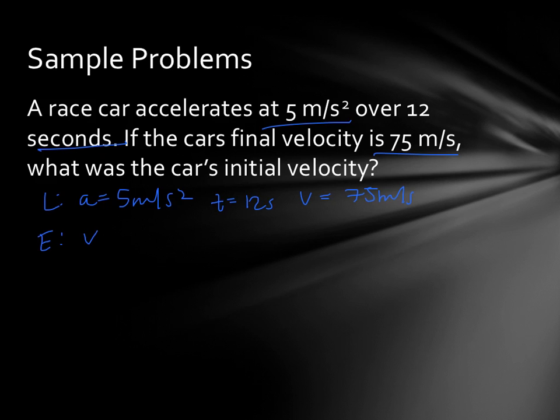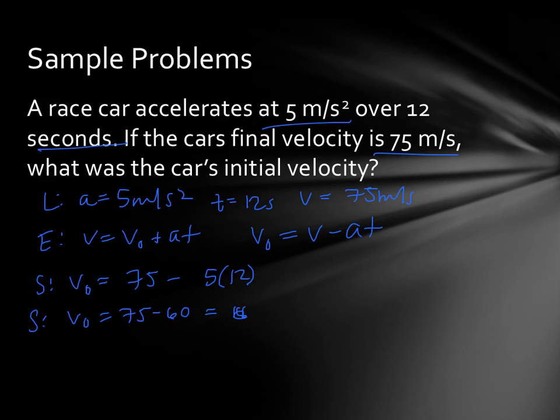Our equation, if you go with the standard writing of the AP equation sheet, this is the equation you would always start with. So, if we want to solve for v₀, we're going to subtract at from both sides. So, we'll be v minus at. And then, if we substitute in our knowns, we have 75 minus 5 times 12. If we solve, we have 75 minus 60, which equals 15. And our unit, since we're solving for velocity, is meters per second.